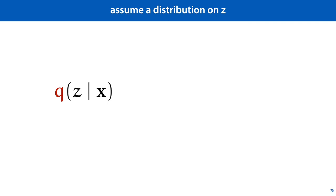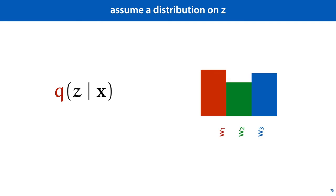Our first step is to assume some arbitrary function which gives us a distribution on z for x. This could be a very accurate distribution, which gives us just the right distribution on the components for x, or a terrible one. We'll first work out some properties that hold for any q, good or bad. Since z can take one of k values, you should think of q of z given x as a categorical distribution over the components in our model — for a particular x, it tells us which components are most likely. This is the same kind of function as the responsibilities we defined earlier, and we will see that q will become the responsibilities later. But right now, we are making no assumptions about how q is computed, and we're just saying that it could be a completely arbitrary and entirely incorrect function.